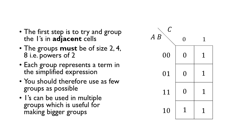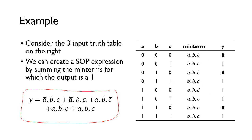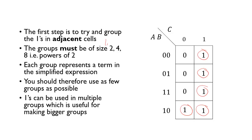To simplify using the Karnaugh map, the first step is to group the 1s together in adjacent cells. Groups must be in powers of two: 1, 2, 4, or 8. If you grouped all five 1s individually, you'd just get the full SOP expression with five terms — no simplification. The idea is to make groups as large as possible, because each group represents one term in the simplified expression. Fewer groups means fewer terms. The Karnaugh map makes it very easy to visually spot these groups.